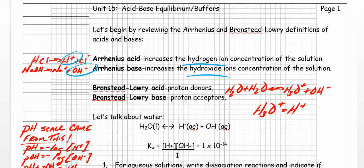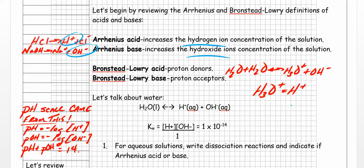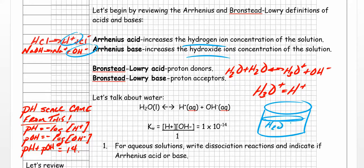Let's take a look at the ionization of water. As it turns out, in a container of water, it's not all H2O. What's going to happen is that H2O is going to ionize slightly. The water is not all H2O - there's also H+ ions and OH- ions in that solution.